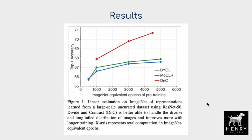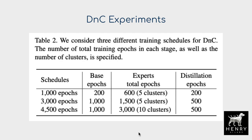Results comparing Divide and Contrast to Bootstrap Your Own Latent and MoClear alone show performance measured in pre-training epochs against top-1 ImageNet accuracy using linear evaluation—where the 256-dimensional representation is fed to a linear classifier without nonlinear projections. The results demonstrate that Divide and Contrast benefits from more pre-training and achieves exciting improvements over previous contrastive learning frameworks.